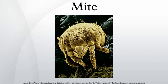Insects may also be infested by parasitic mites. Examples are Varroa destructor, which attaches to the body of the honeybee, and Acarapis woodi, which lives in the trachea of honeybees. There are hundreds of species of mites associated with other bee species, and most are poorly described and understood.